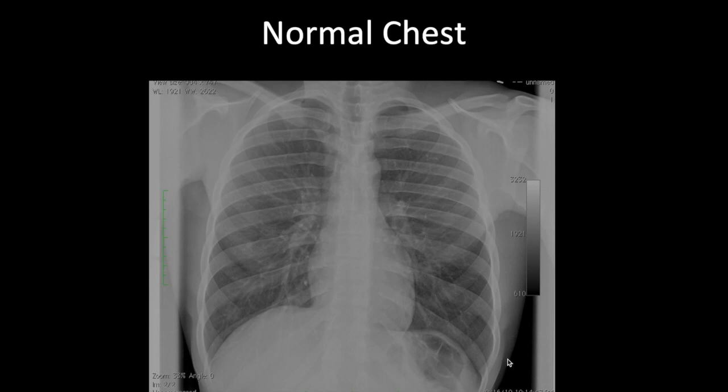There will be a side marker telling you which side is left or right. Only the person who has done the image — the radiographer or technician who took the film — can tell you which side is right or left. So they will label the film to indicate which side is which.